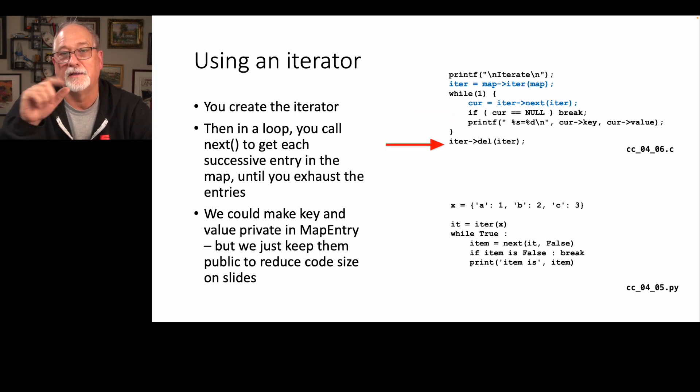And then I delete the iterator. And this is super equivalent to what we do in Python, where we say x equal, give me the iterator for the dictionary x and the variable it. Then while true, we advance to the next of it, otherwise give me false. If we got a false, we're done, and otherwise we print it. So these two are very, very parallel. And you'll notice that Java and C++ don't do iterators the same thing, but I wrote this C code to mimic Python's way of doing this.